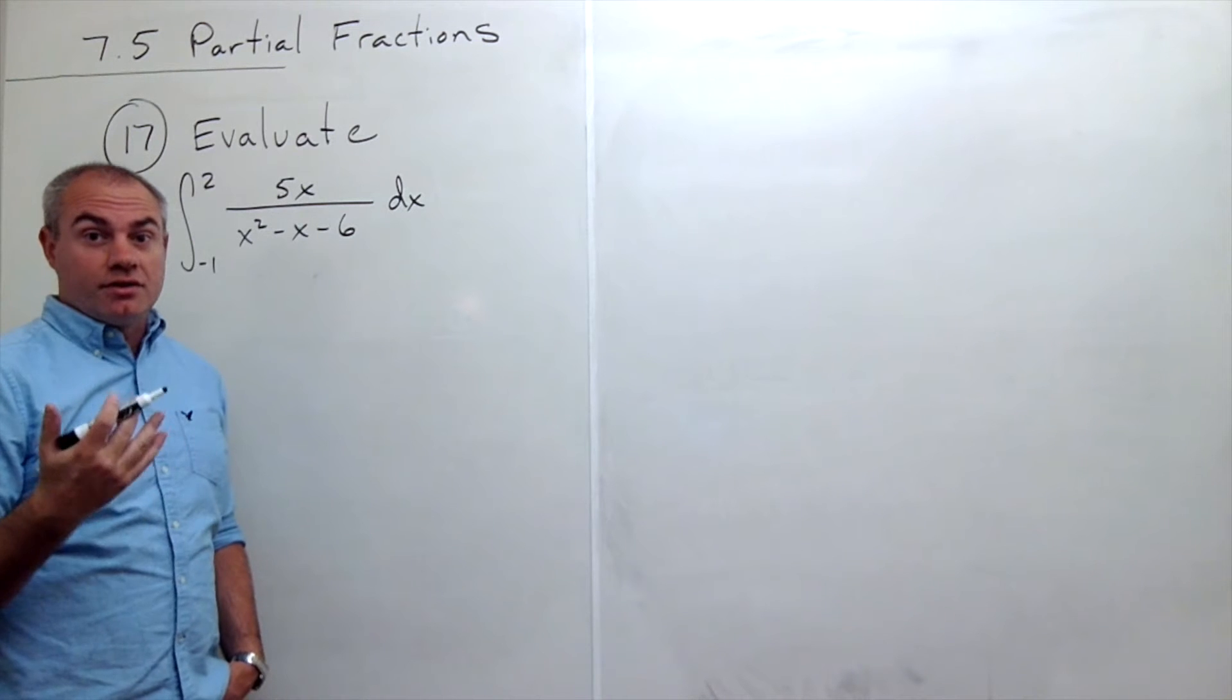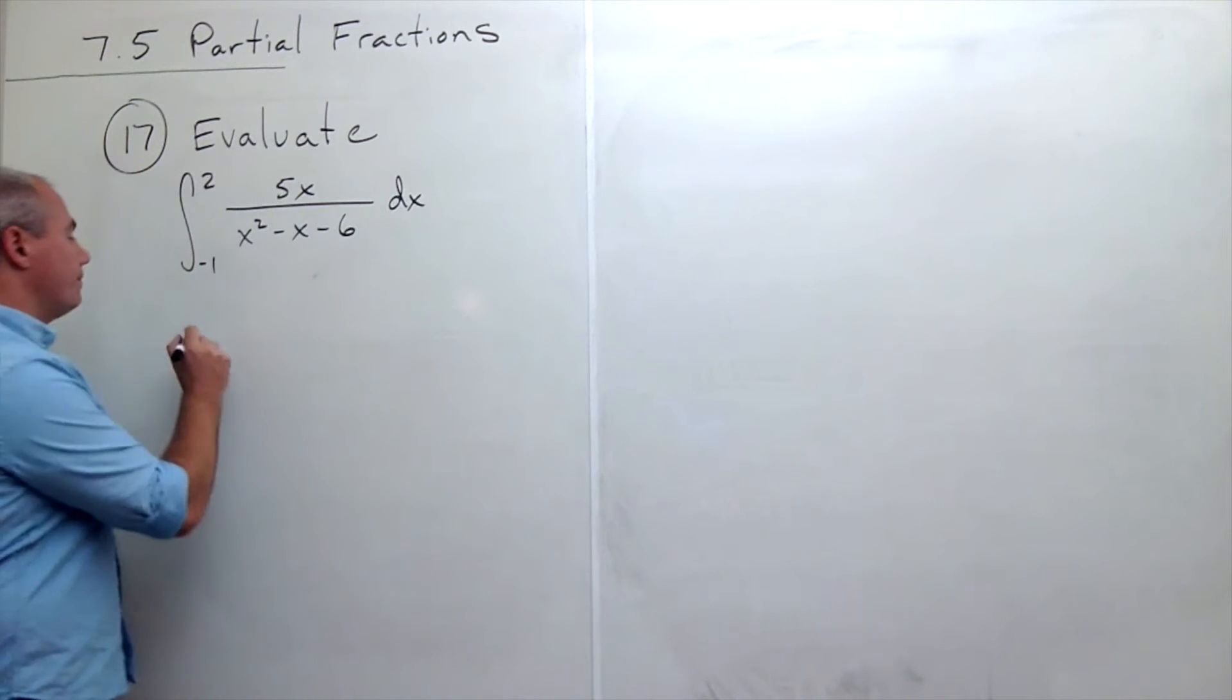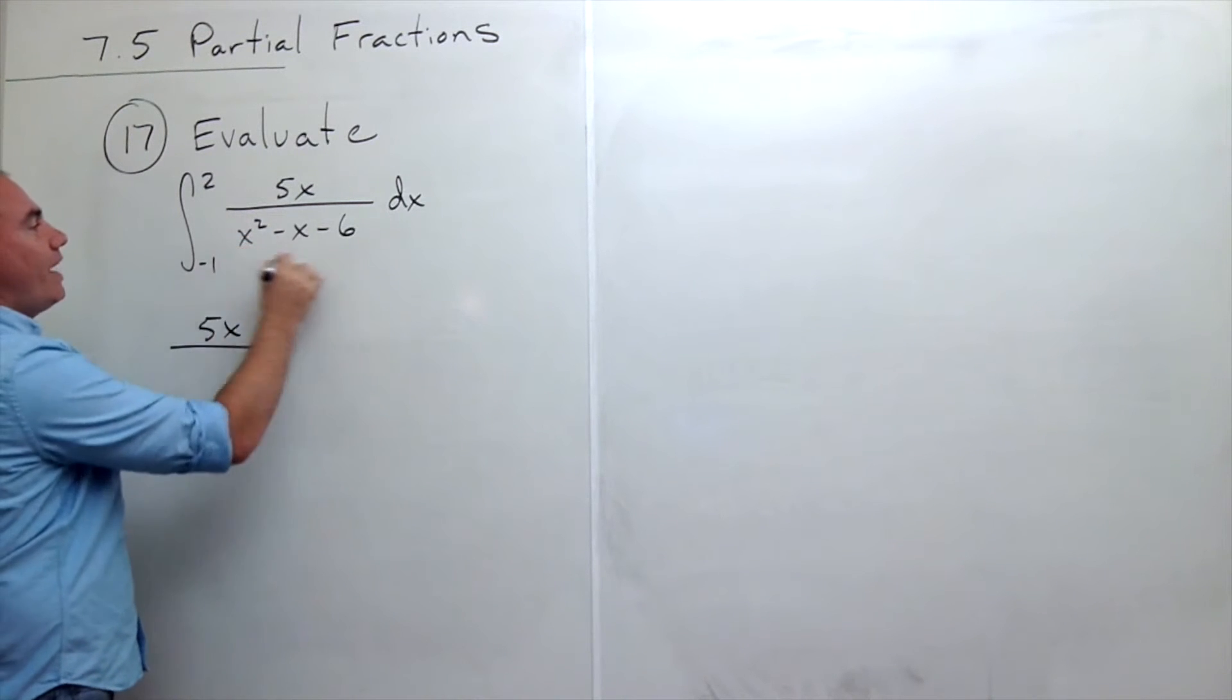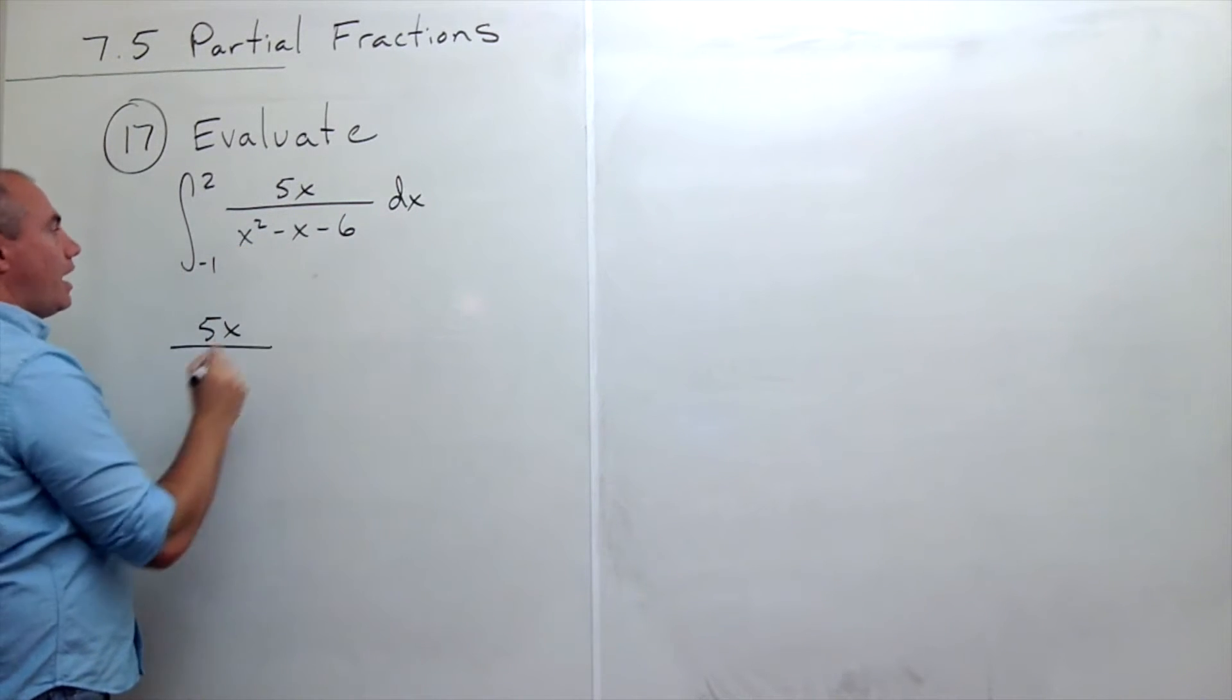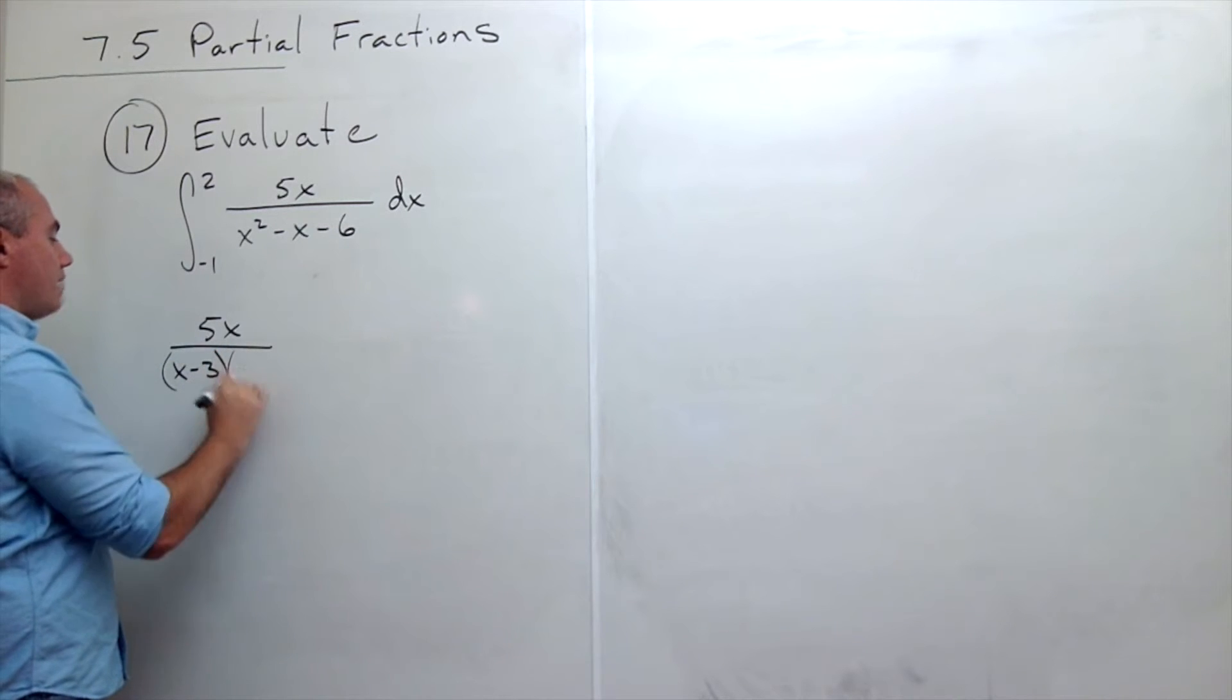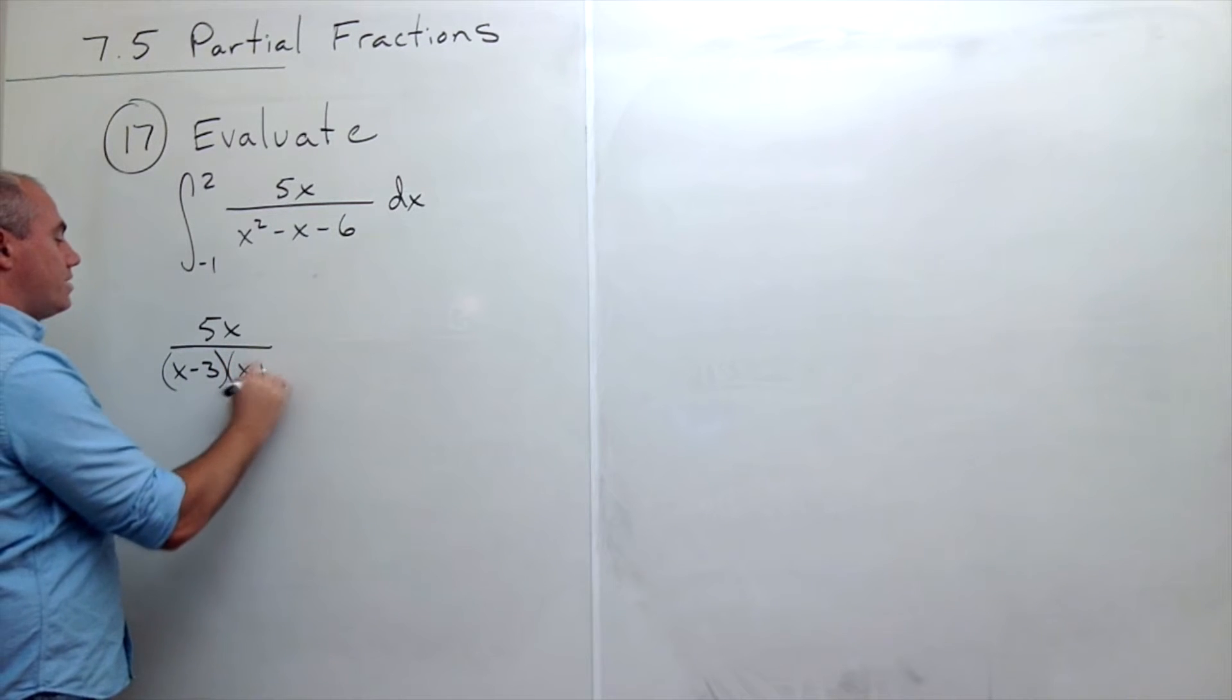Then we're going to worry about the integration piece. So I have 5x over, and if I factor this guy, I get x minus 3 times x plus 2.